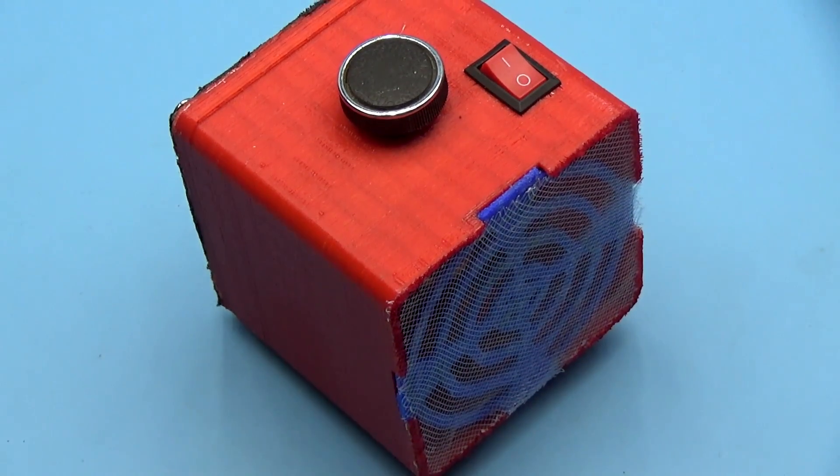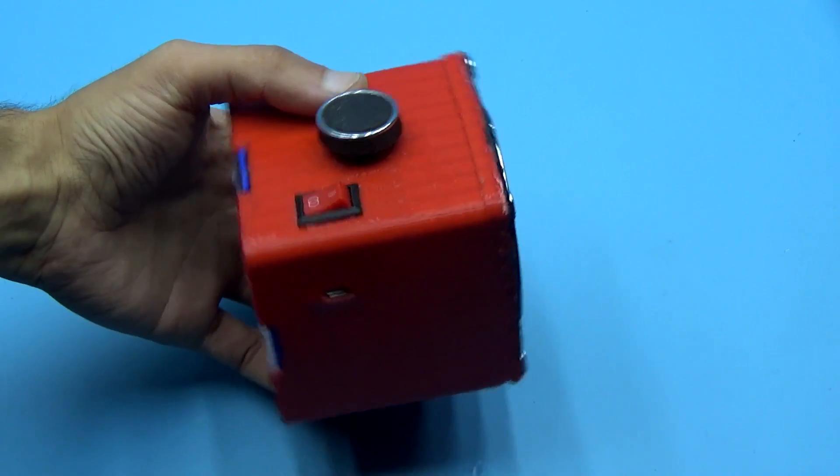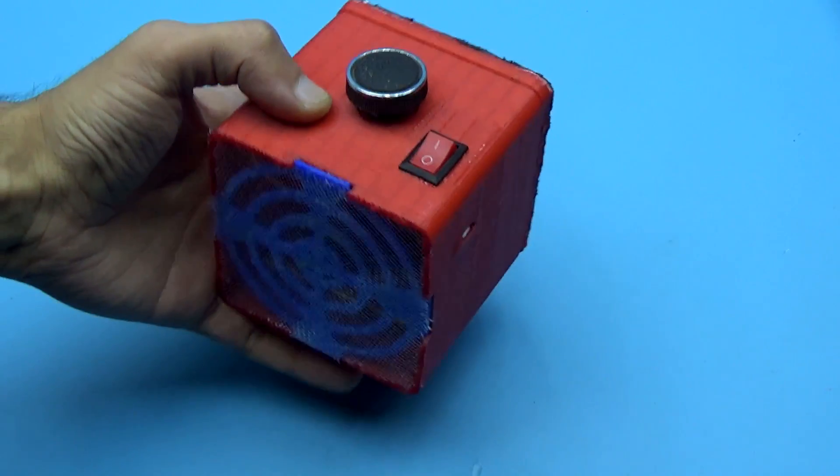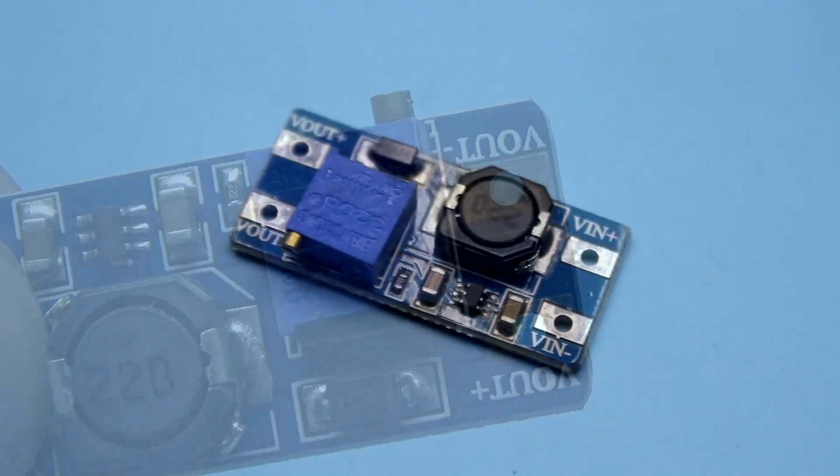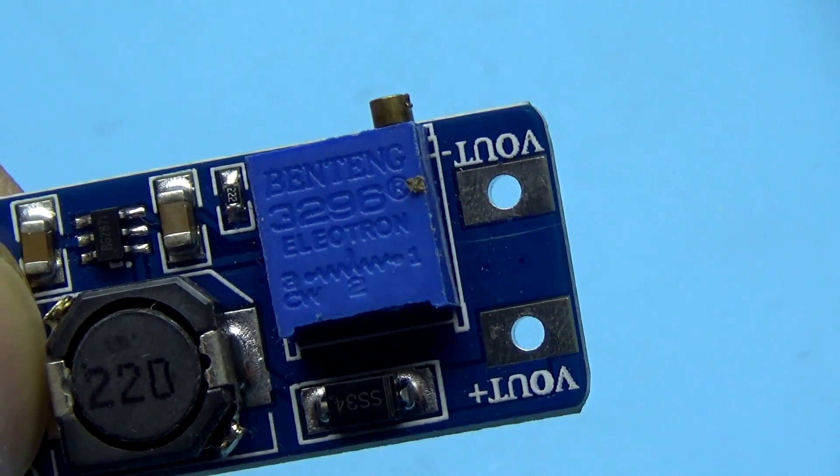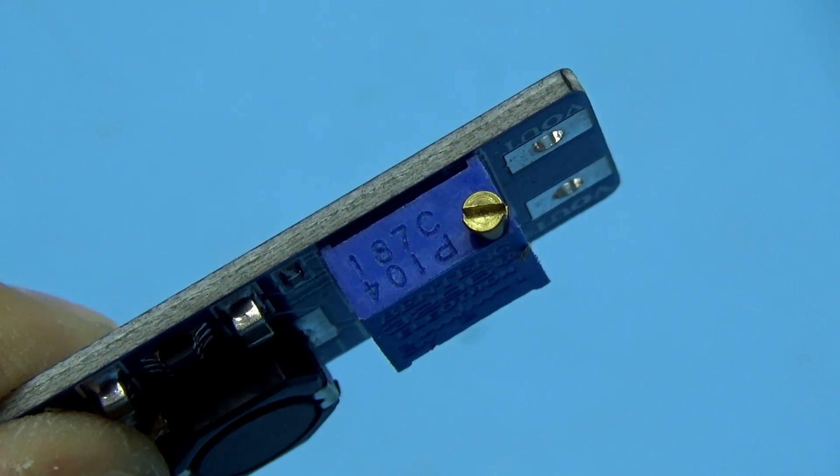If necessary, the exhaust fan can be used as a stationary unit. The charge module makes it possible to simultaneously recharge the battery and power the fan. Let's go back to the converter board. It has a 100kΩ trimmer which makes it possible to set the output voltage up to 27V.